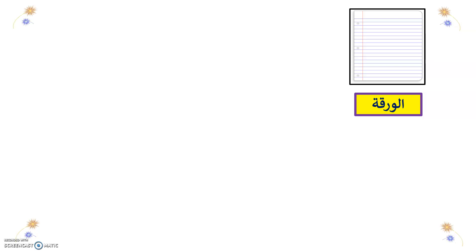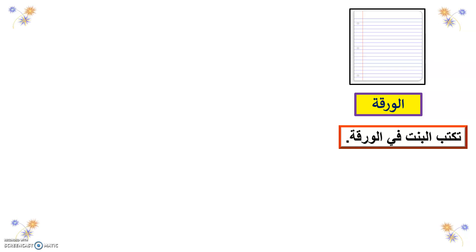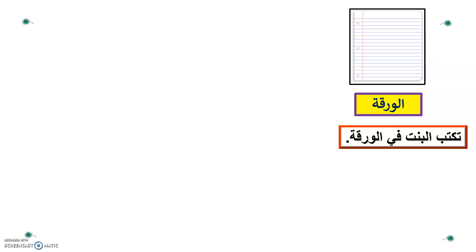Can you give me a sentence? Ana aqtub fi alwaraka — I write on the paper. Also: Taqtub albint fi alwaraka, or albint taqtub fi alwaraka — the girl writes on the paper.